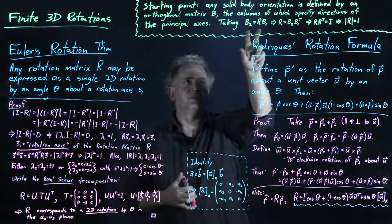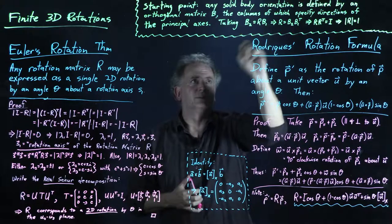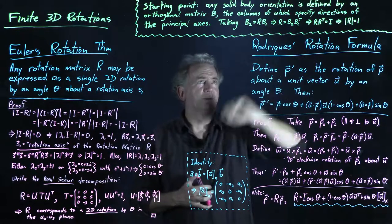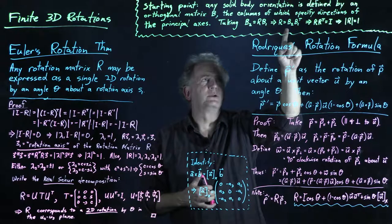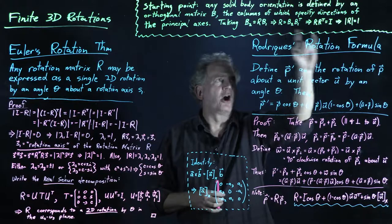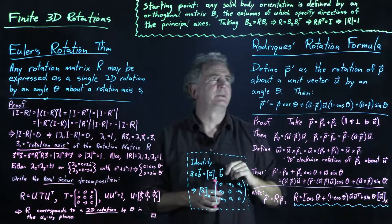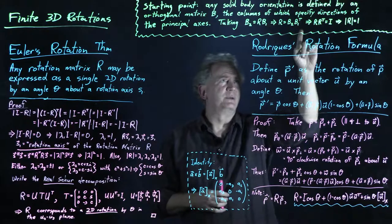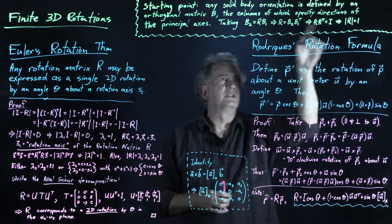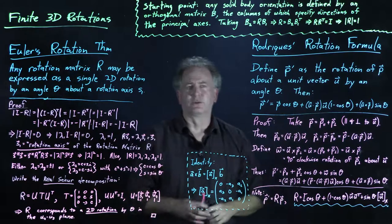We have the expression B2 = R·B1. Multiplying from the right by B1 transpose — which equals B1 inverse because B is orthogonal — we get R = B2·B1ᵀ. Taking R times its transpose, B1ᵀ·B1 = I and B2·B2ᵀ = I, so R·Rᵀ = I. Therefore R itself is an orthogonal matrix.